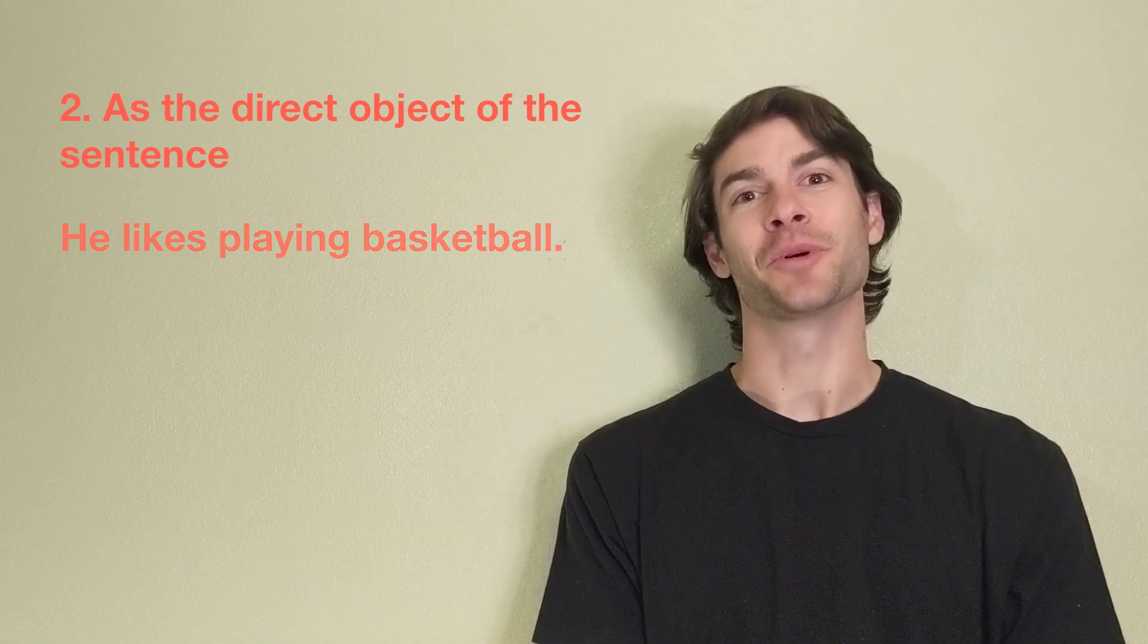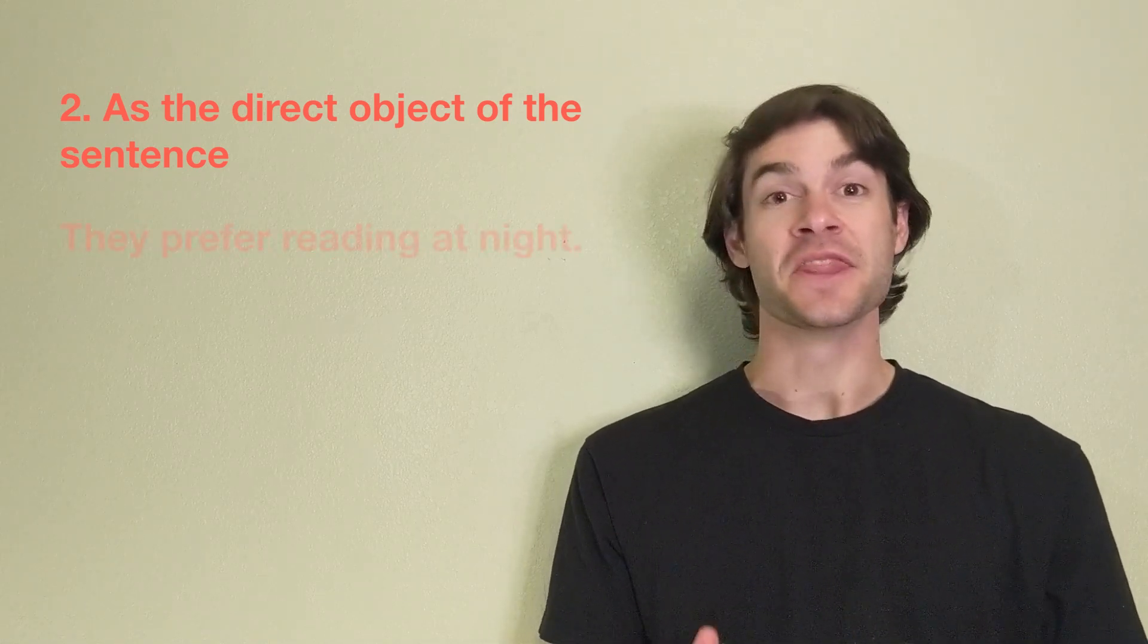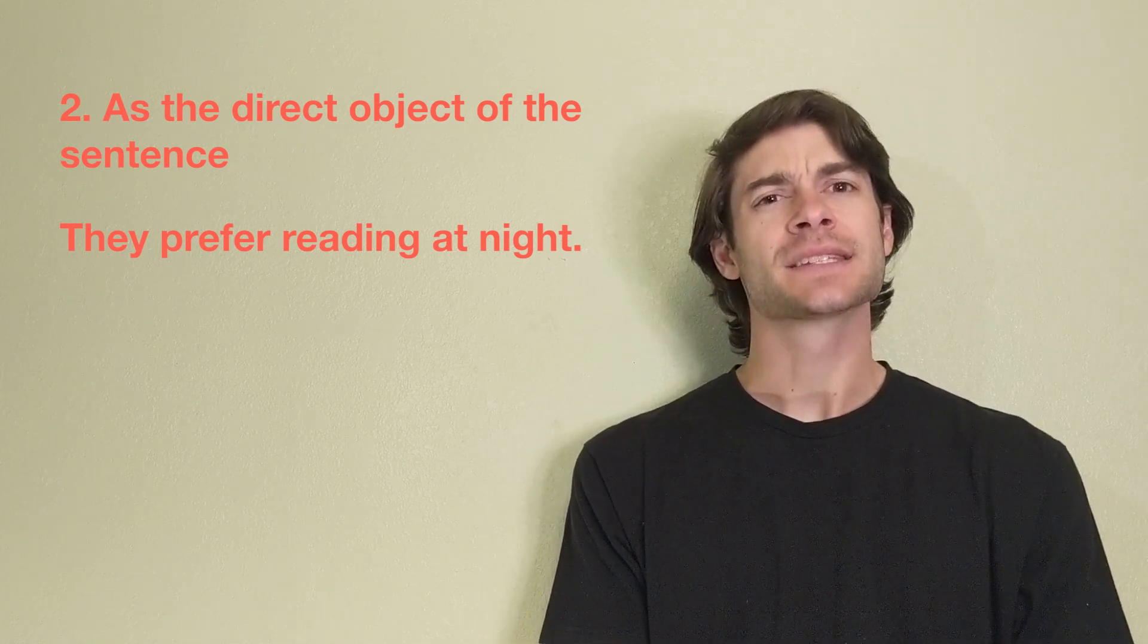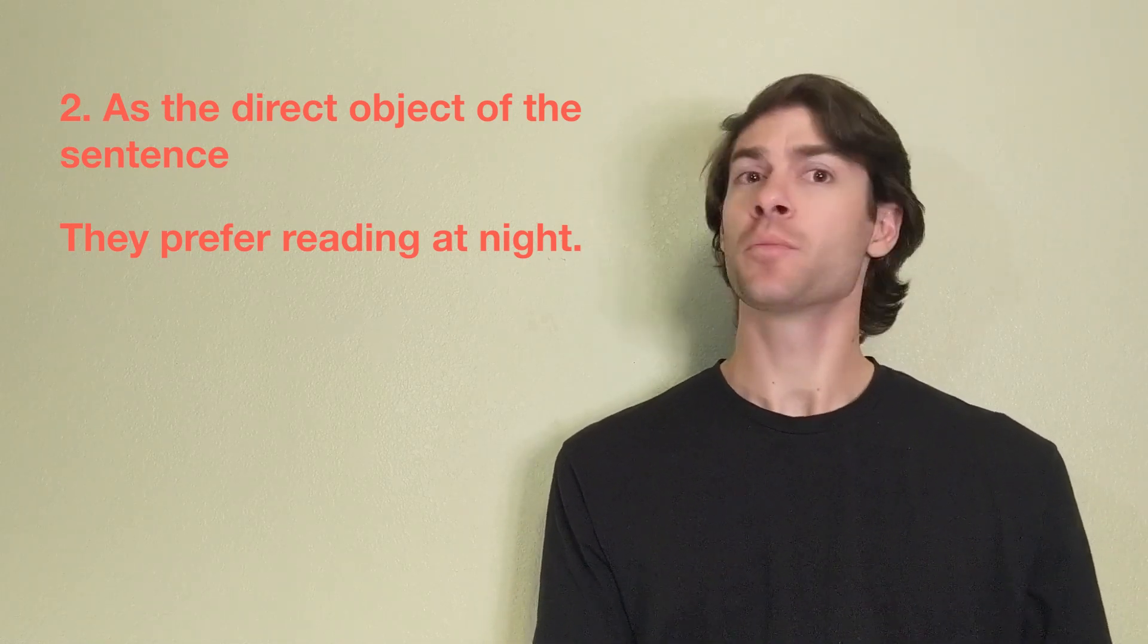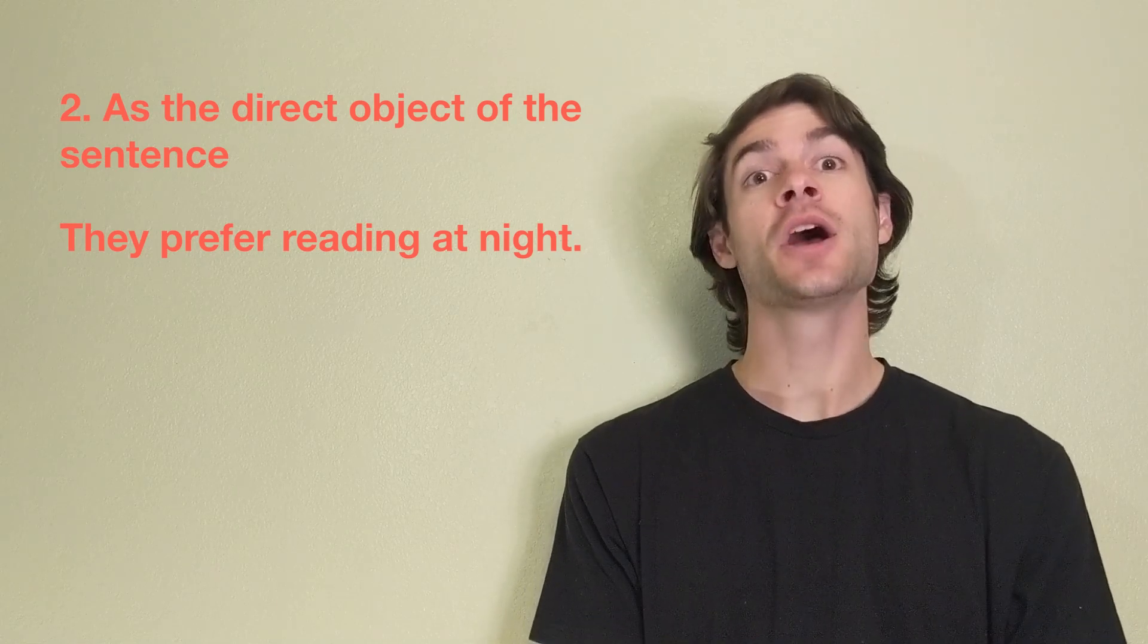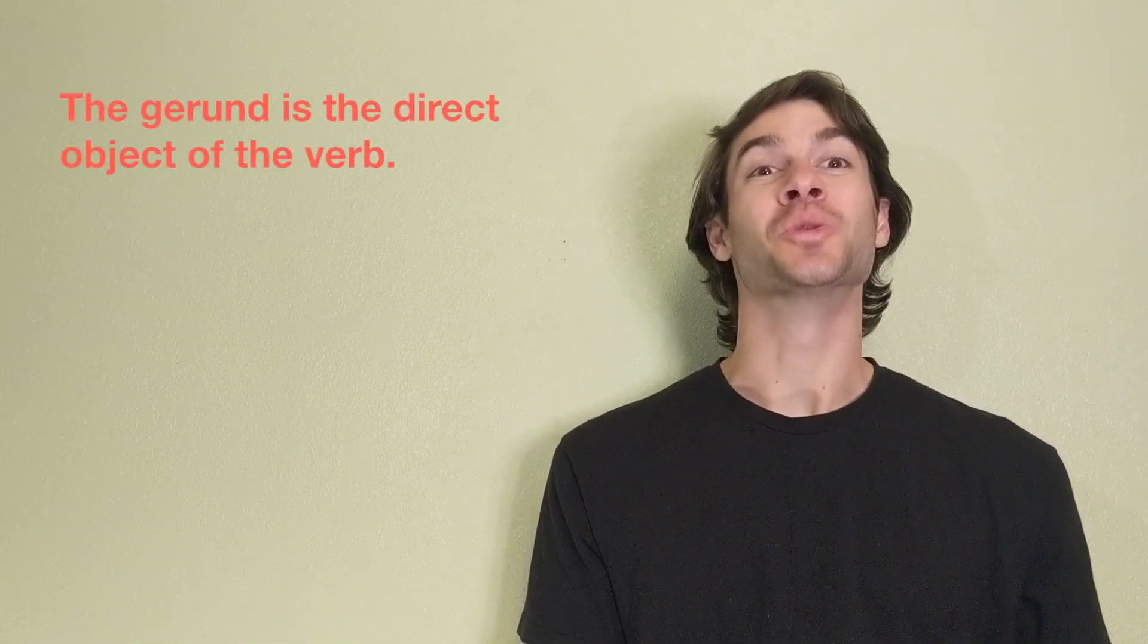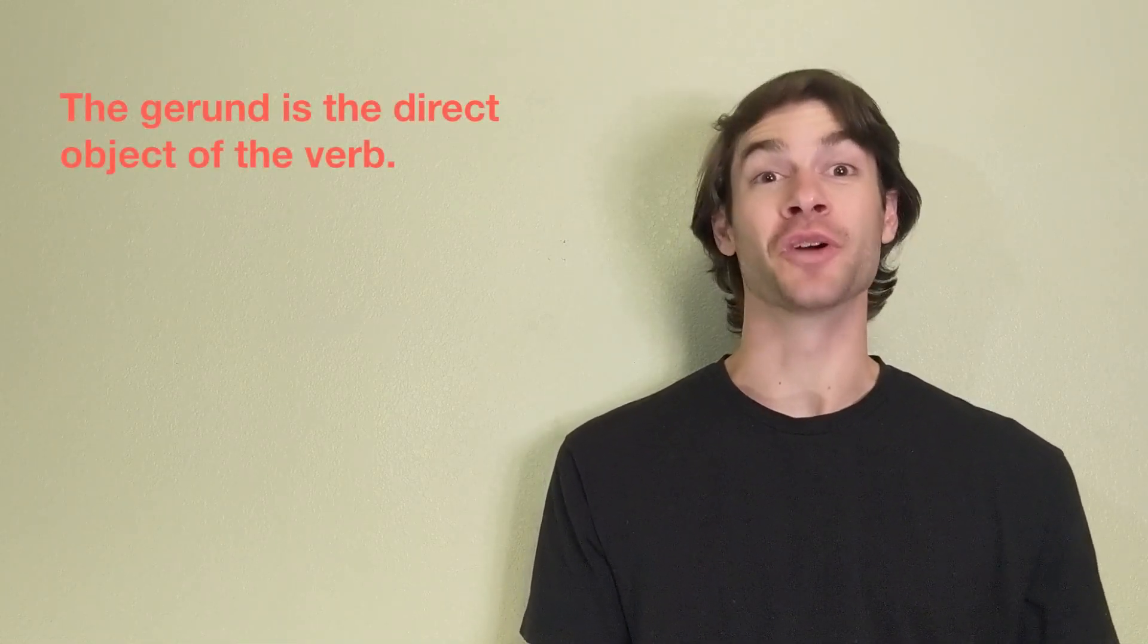As another example, in the sentence, they prefer reading at night, we can ask, what do they prefer? They prefer reading. In both of these examples, the gerund is the direct object of the verb.